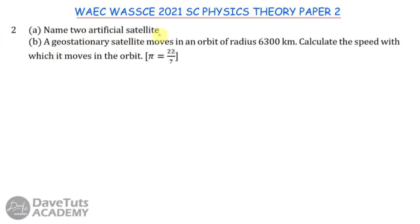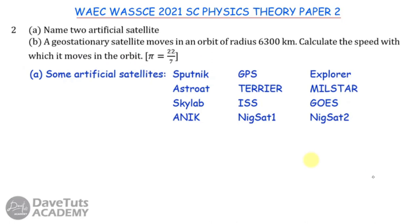In this question, we are asked to name two artificial satellites. Some examples include Sputnik, GPS, Minster, and Goals. Since we are asked to name only two, any two of these will suffice.